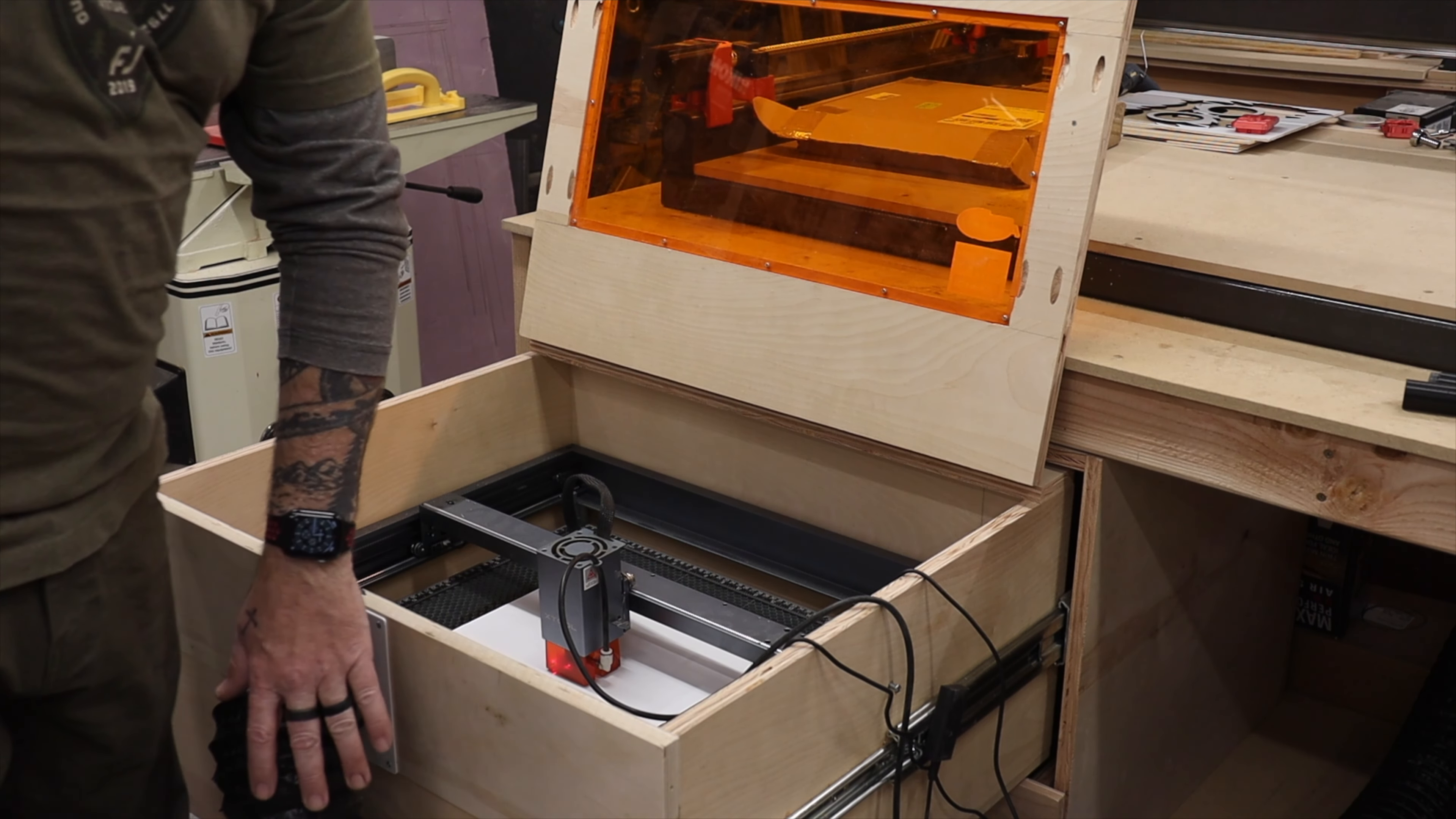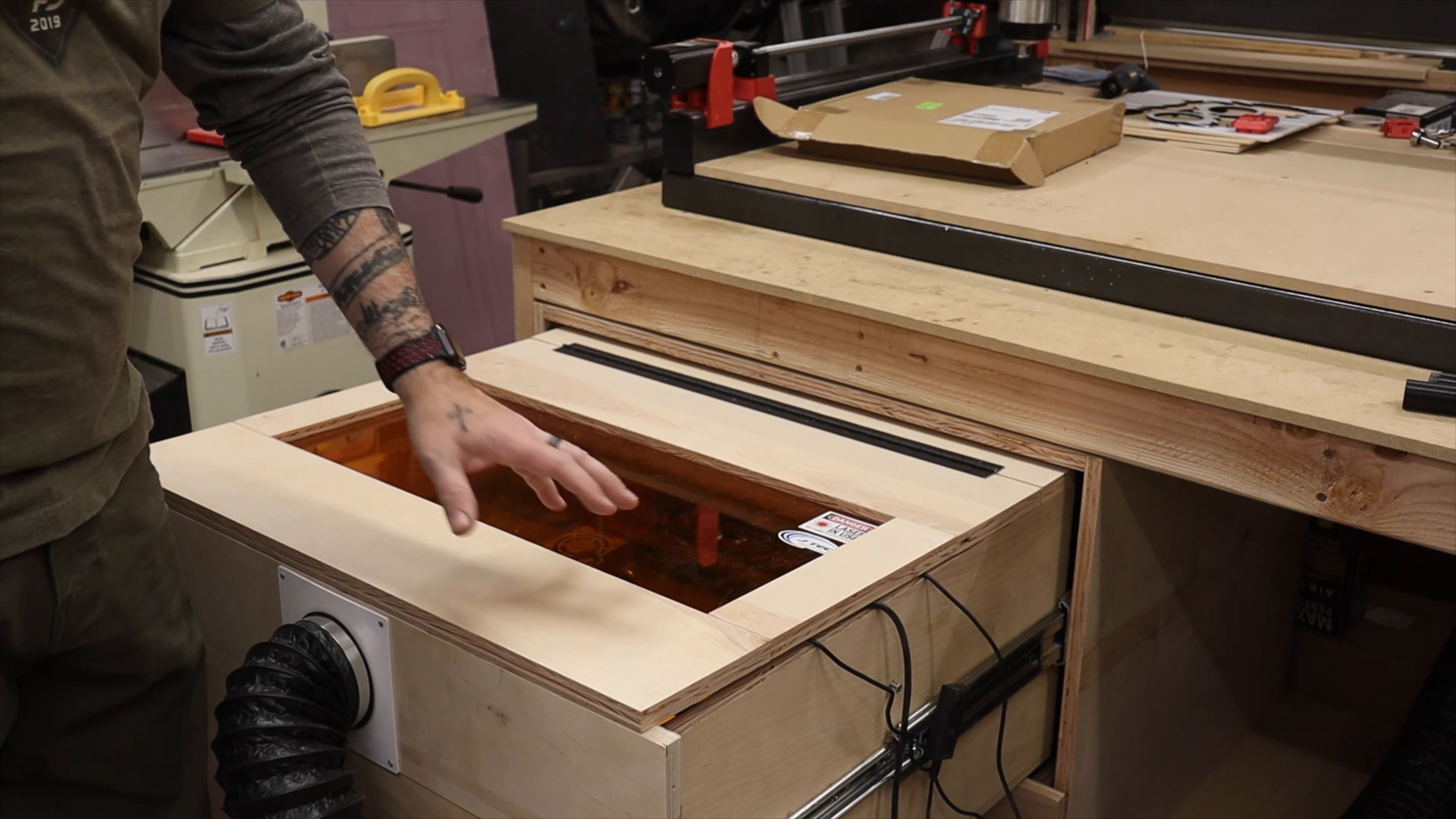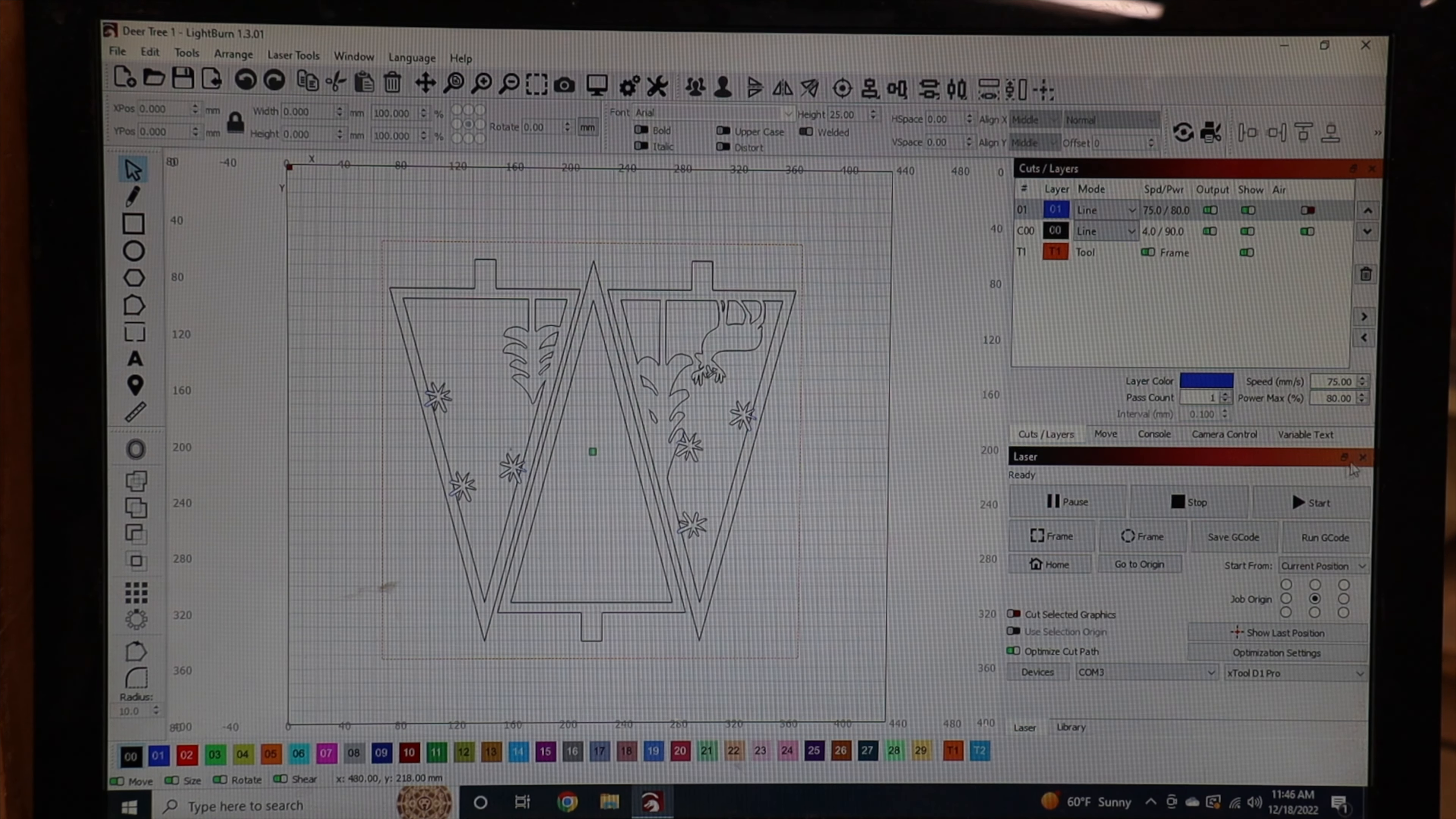All righty. So I've got the fan running. The duct is going out of the garage door. So I'm just going to close this to make sure that we are getting all the smoke out and make sure that this laser glass or plastic is going to protect our eyes. I'm going to turn on air assist and I'm going to hit start.